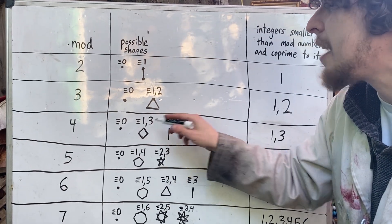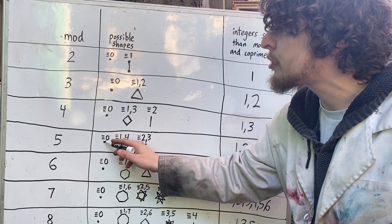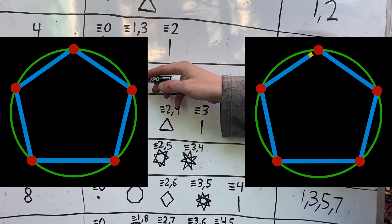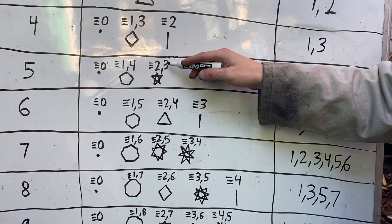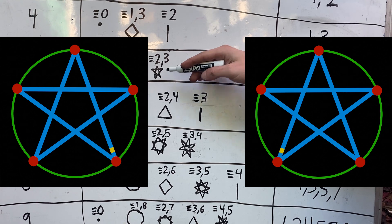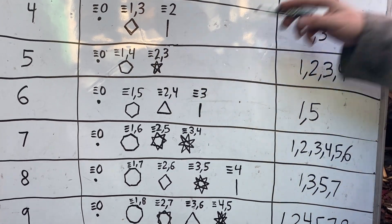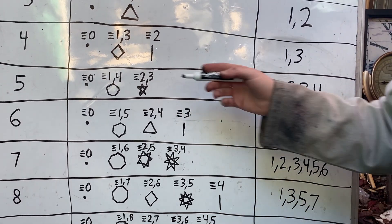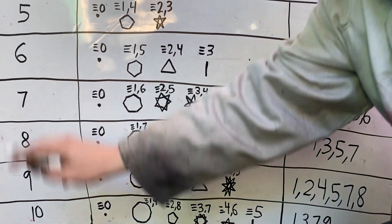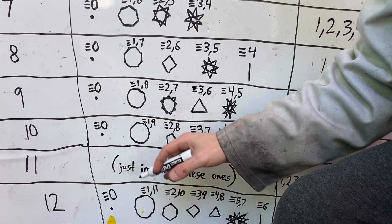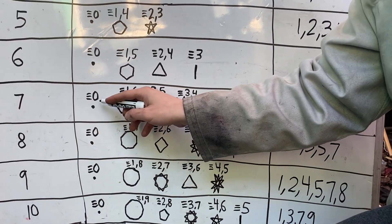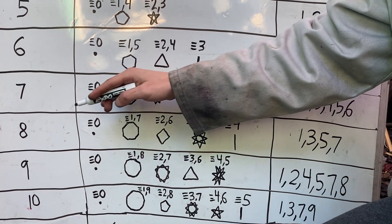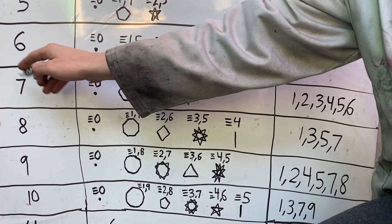The numbers co-prime to the mod are the ones that touch every dot. In mod 5, numbers congruent to 0 visit a single dot; those congruent to 1 or 4 visit all five in a pentagon shape; those congruent to 2 or 3 also visit all five in a star shape — because 1, 2, 3, and 4 are all co-prime to 5. This pattern holds for other prime mods like 7 or 11: apart from 0, every other value is co-prime to a prime mod, so all visit every dot.